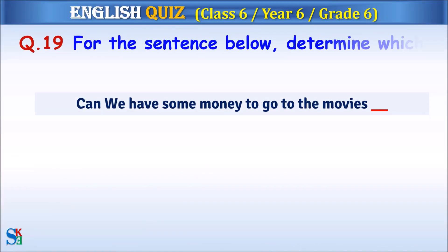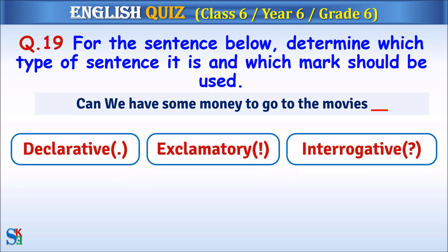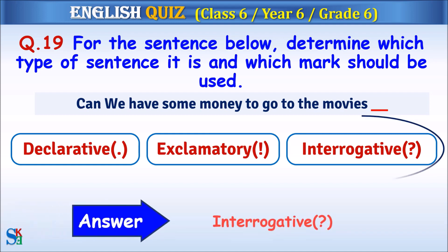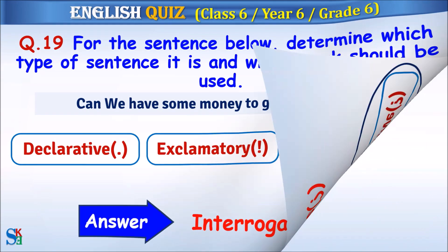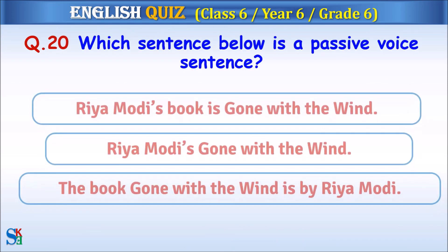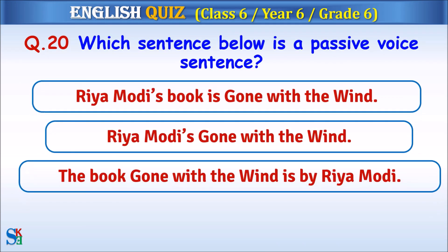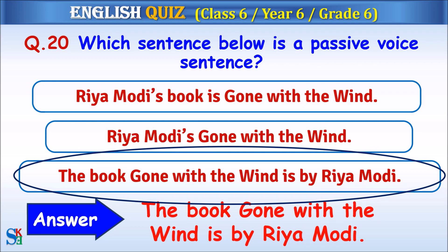Question 19: For the sentence below, determine which type of sentence it is and which mark should be used. The answer is 'interrogative.' Question 20: Which sentence below is a passive voice sentence? The answer is 'The book Gone with the Wind is by Ria Modi.'